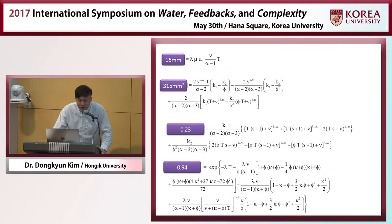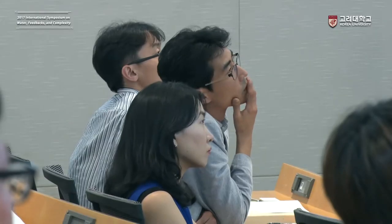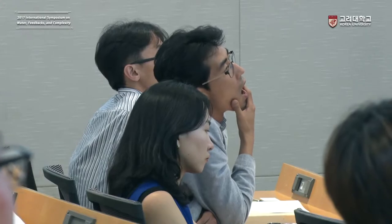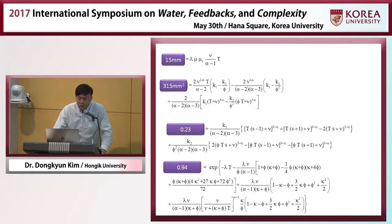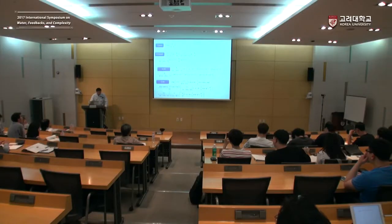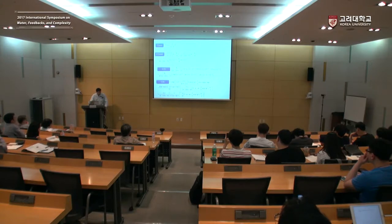Very luckily, in 1988, Dr. Rodriguez-Iturbe derived equations where the left-hand side is the rainfall statistics — mean, variance, covariance, and probability of dryness — and the right-hand side is expressed in terms of the six parameters. We can calculate the left-hand side using the observed rainfall time series, and the right-hand side is a composite of six terms. So we have four equations and six unknowns, giving us an infinite number of solutions. We need more equations.